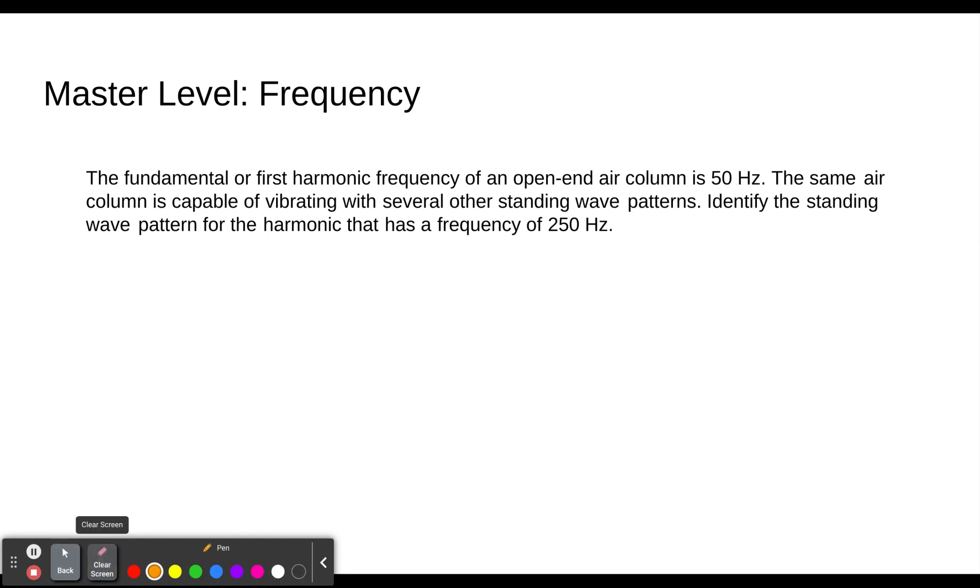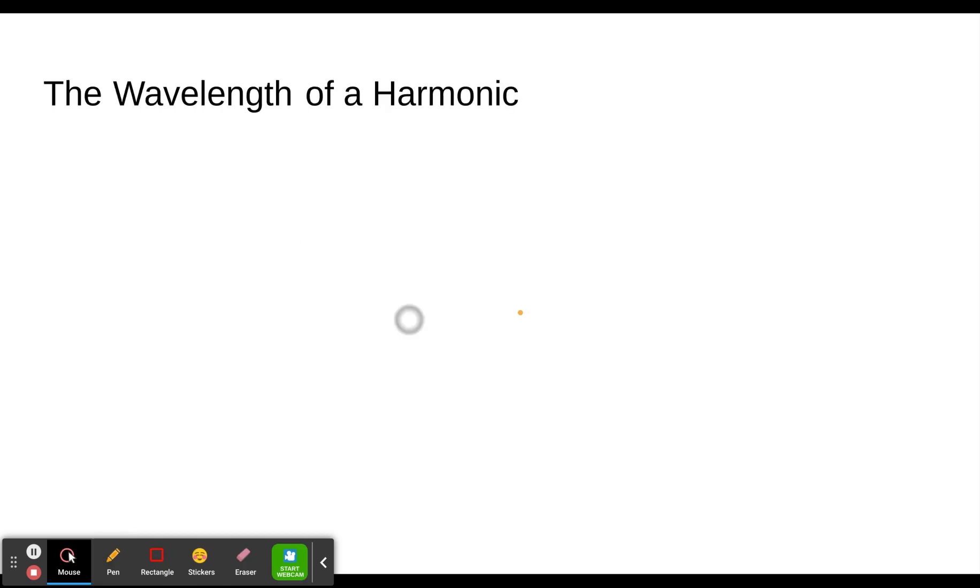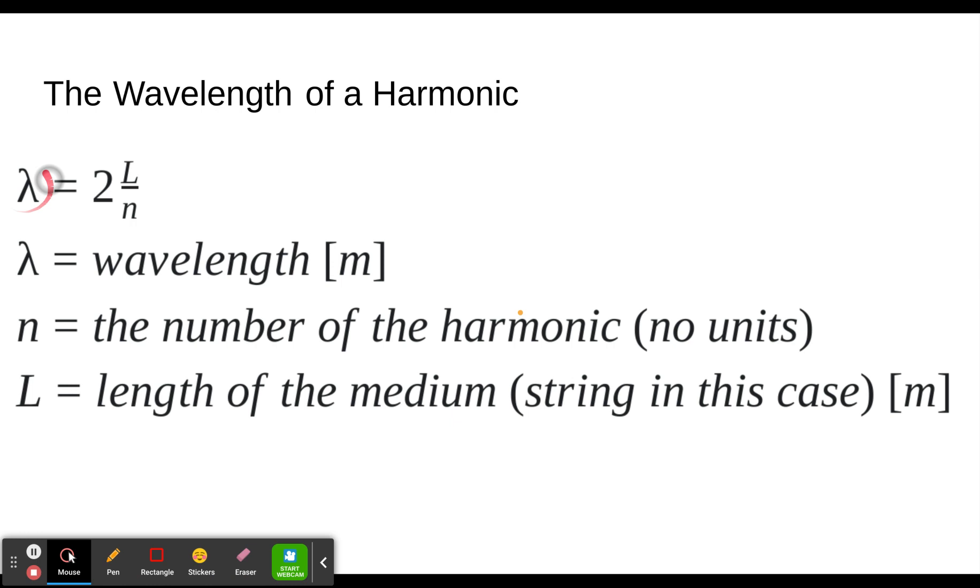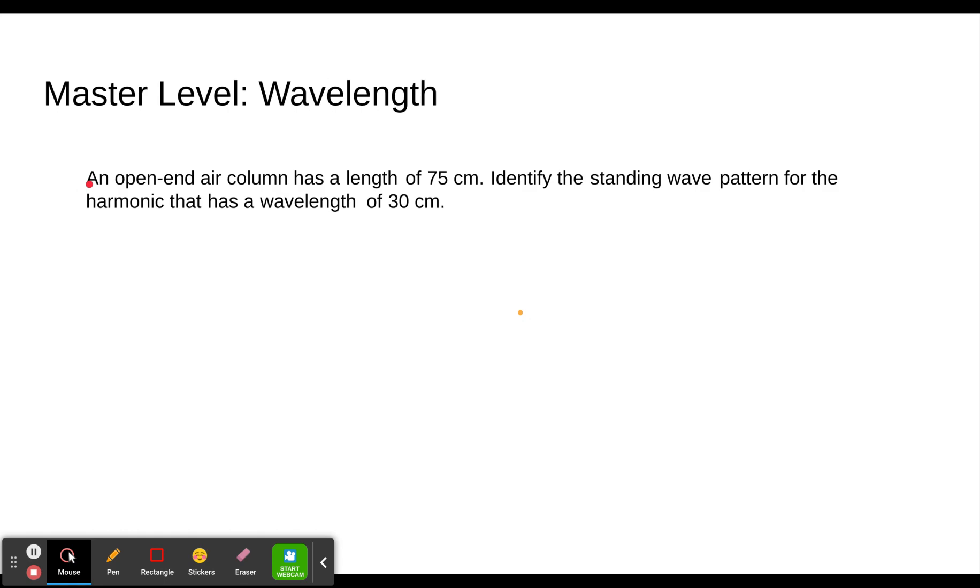Moving on to the wizard level and wavelength. So wavelength, remember the length of the wave is 2 times the length of the air column divided by the wavelength. Two because each harmonic is half a wavelength. So we need the 2 in there. An open-ended air column has a length of 75 centimeters. Identify the standing wavelength for a harmonic that has a wavelength of 30 centimeters. So here's our wavelength. This is our L. So we remember our equation was wavelength equals 2L over N.